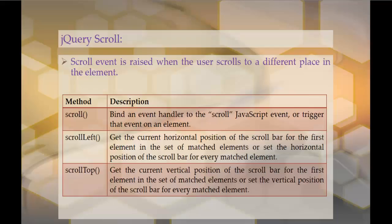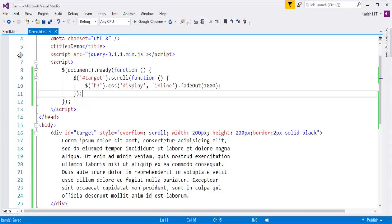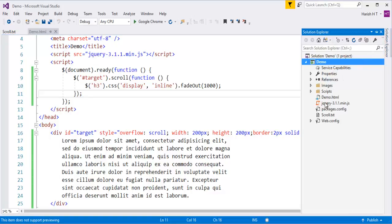Apart from the scroll event, we have two other methods: scrollLeft and scrollTop. scrollLeft is going to get the current horizontal position of the scroll bar for the first element in the set of matched elements, or set the horizontal position of the scroll bar for every matched element. I already have the HTML code for the scrollLeft demo, let me copy that.